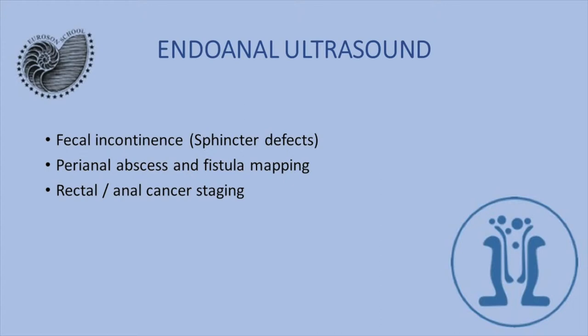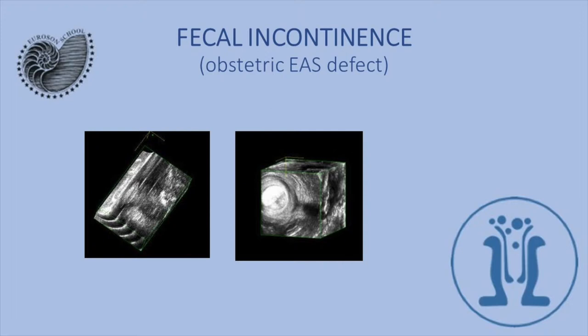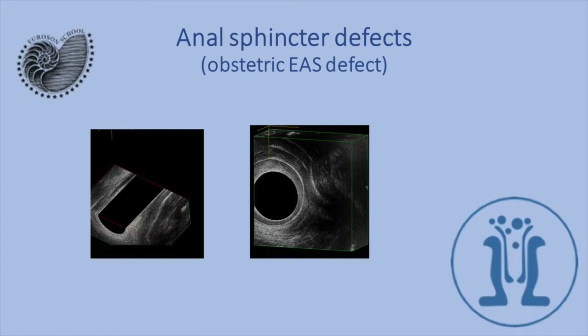Here we see an obstetric anal sphincter defect with a small fistula in a young woman. Here is the fistula, and we see that the sphincter is very small in the anterior position. Here we see with my finger inside the vagina that the anal sphincter is very small anteriorly because of a difficult delivery.